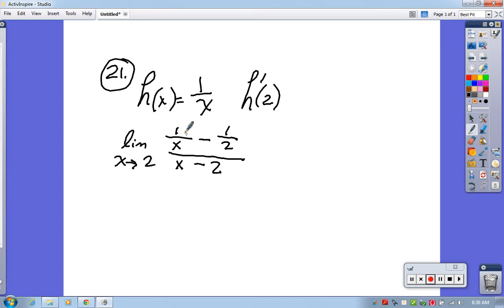Notice what we're doing: these are the y values, output values, and these are x values. We're just finding the slope as x approaches 2. We can't just plug 2 in because we'd be dividing by 0, so we're going to have to do a little bit of manipulation here.